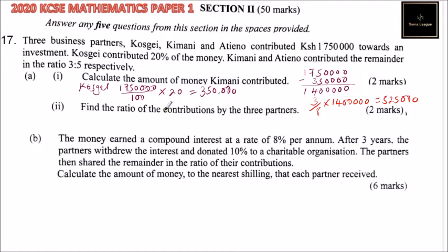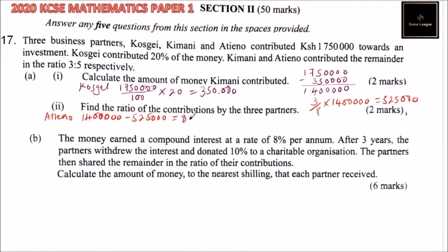Roman numeral two: find the ratio of their contributions. First, we need to know how much Atieno contributed. From 1,400,000 — that is what Kemani and Atieno contributed together — we subtract what Kemani contributed, which is 525,000. This gives you a balance of 875,000. Now we have the amounts each person contributed.